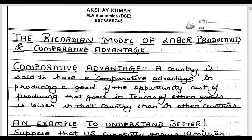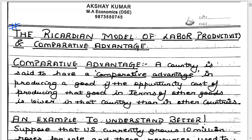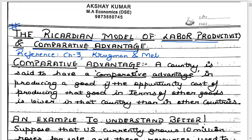I hope I'm audible to all students attending this lecture of International Economics. We intend to start with the first topic, which is the Ricardian model of labor productivity and comparative advantage. The book I prefer to follow is International Economics by Krugman and Melitz, specifically chapter three.